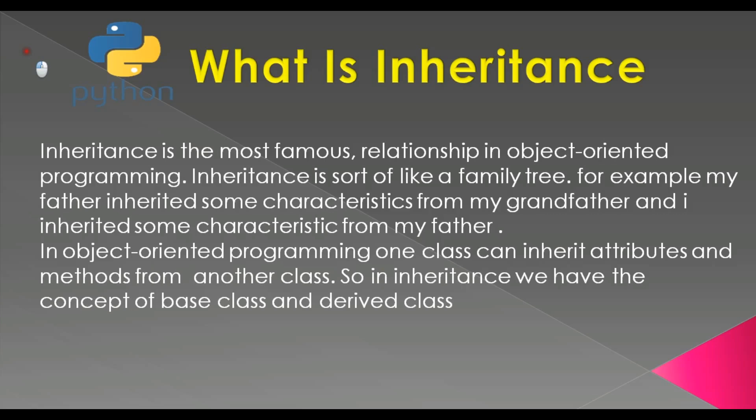Inheritance is the most famous relationship in object oriented programming. Inheritance is sort of like a family tree. For example, my father inherited some characteristics from my grandfather and I inherited some characteristics from my father. In object oriented programming, one class can inherit attributes and methods from another class.